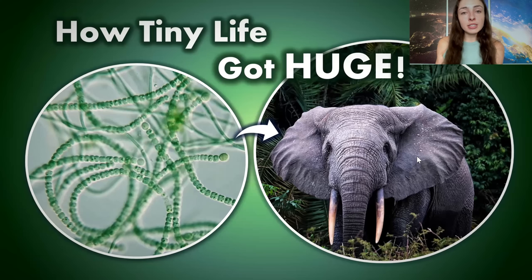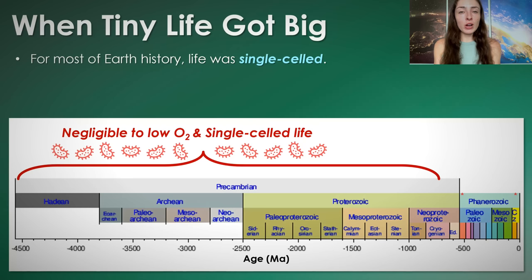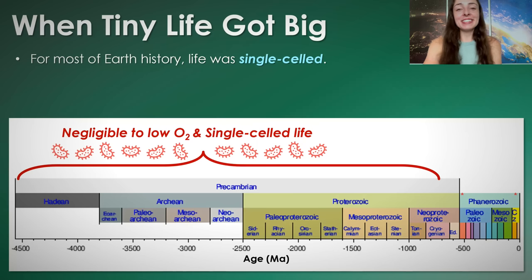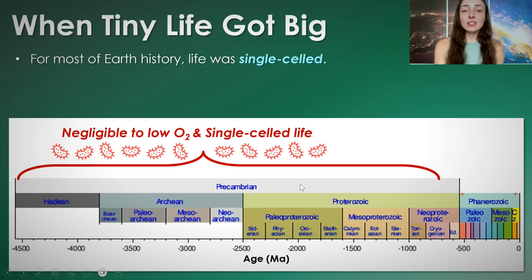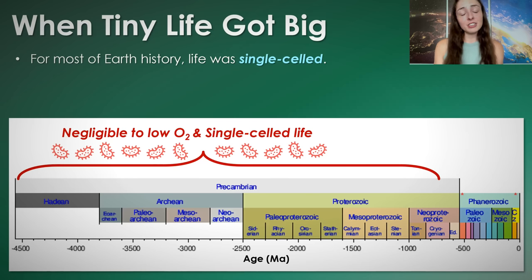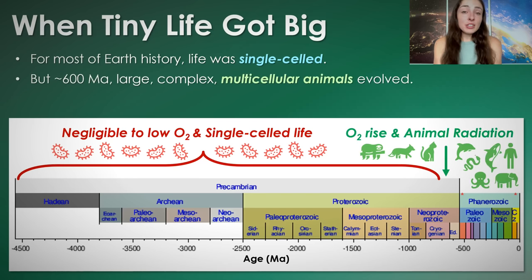For some quick background on what was going on on early Earth — well, we say early Earth, but really the majority of Earth's history was just microbial single-celled life. We can see on this timeline that single-celled microbial life dominated Earth from nearly three to four billion years ago, depending on when life first evolved, until around 600 million years ago when multicellular animal life evolved.